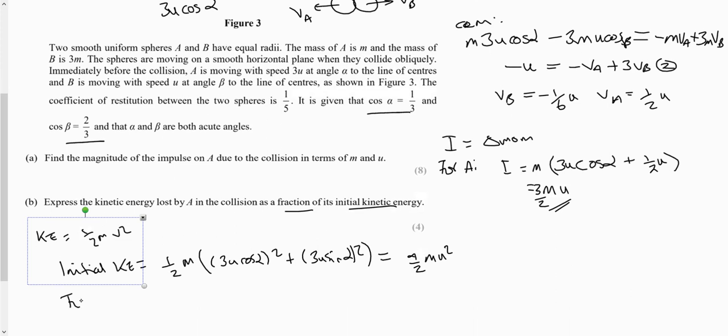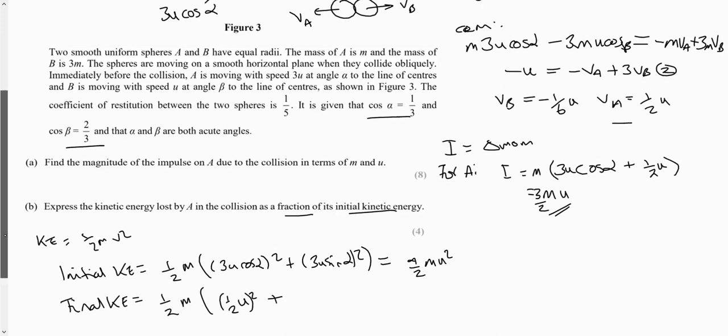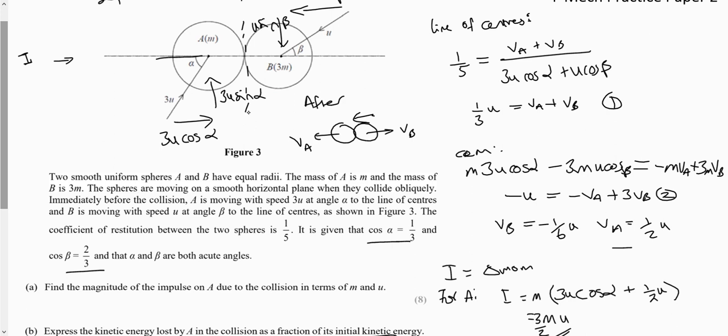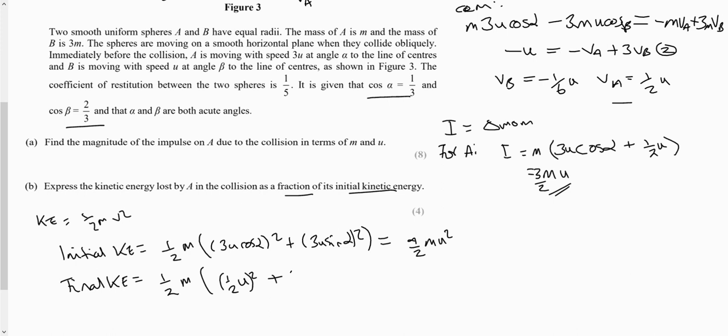I also need my final kinetic energy. So that's a half m. Now, we know that along the lines of centres, this is our Va there, so we had a half u squared. Now, what happens is parallel to the lines of centres, there's no change in the component of velocity along here. So that means afterwards, we've still got 3u sin alpha going in that direction. And if you simplify that one, you should get to 33 over 6mu squared.